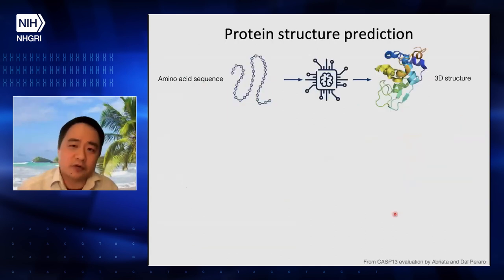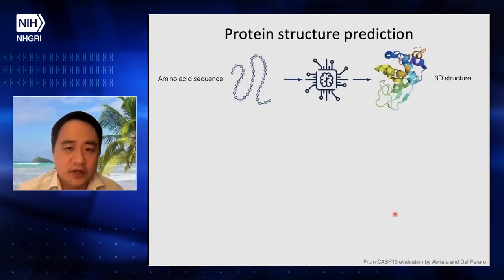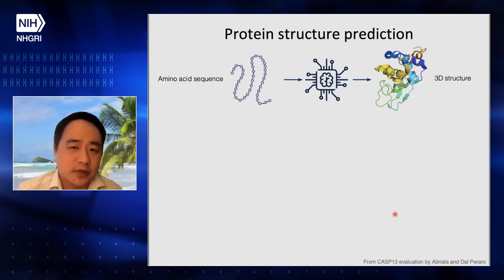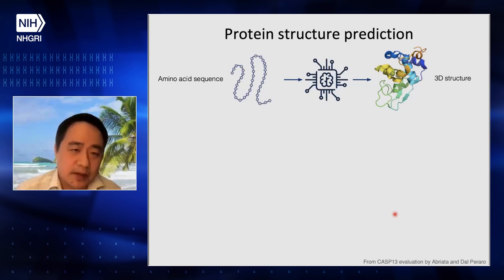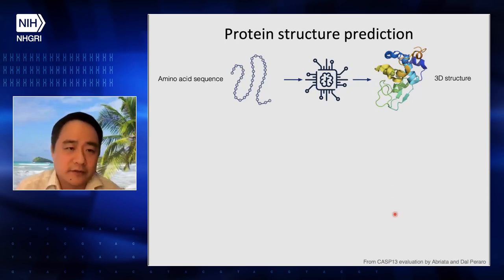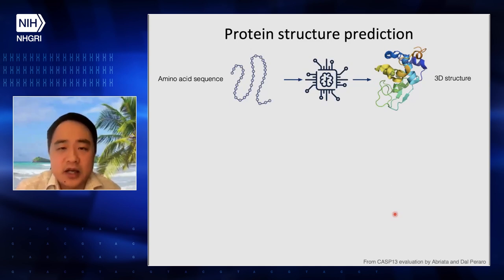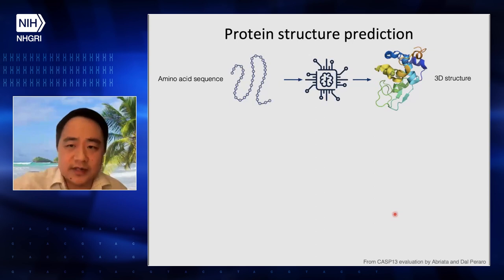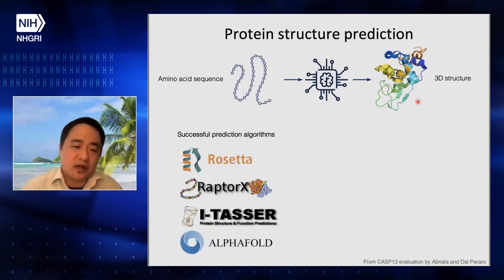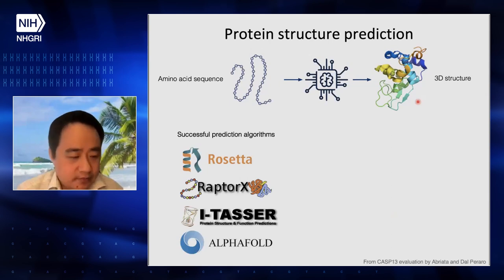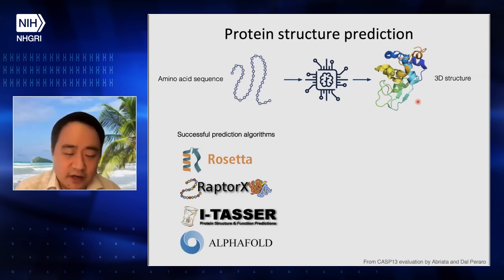Therefore, protein structure prediction remains one of the most challenging problems in computational biology. The task — sometimes called a generalized version of protein folding — is that given an input amino acid sequence, through whatever computational approach, we obtain a three-dimensional structure. There are many successful prediction algorithms including Rosetta, RaptorX, ITASSER, and the newest version of AlphaFold.